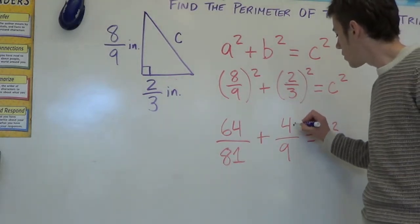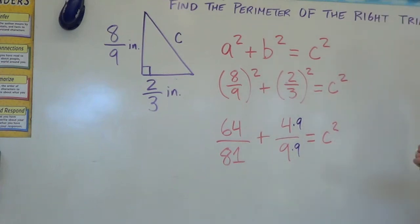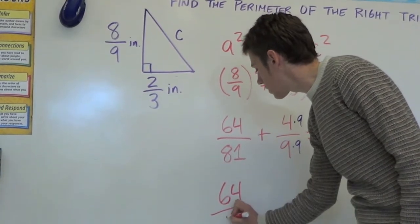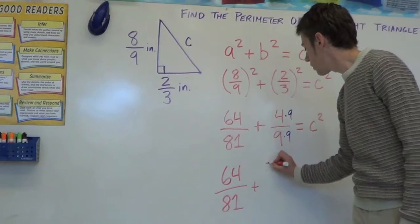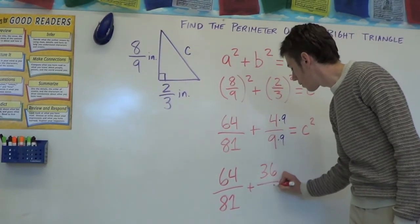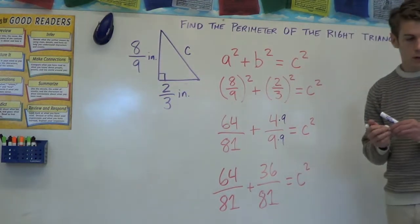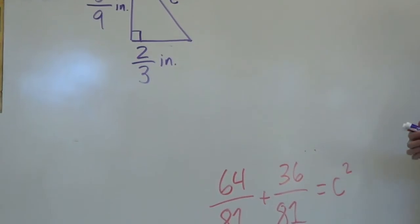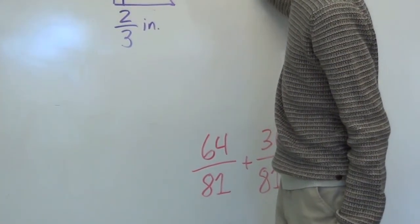That's going to make it 36 out of 81. So we now have 64 over 81 plus 36 over 81 equals C squared. 64 over 81 plus 36 over 81 comes out really nicely to 100 over 81 equals C squared.